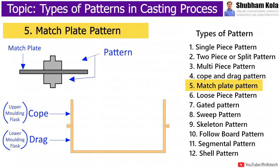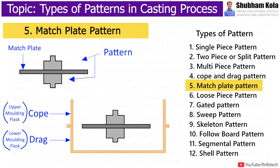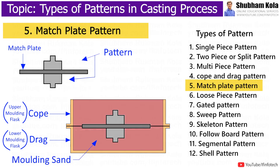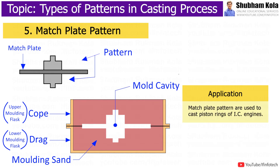Match plate pattern is a split pattern in which cove and drag sections are mounted on opposite sides of a plate, known as the match plate. This will make it easy to cast any shape with high production rate. These patterns are used for mass production. The match plate pattern is used to cast piston rings of IC engine.